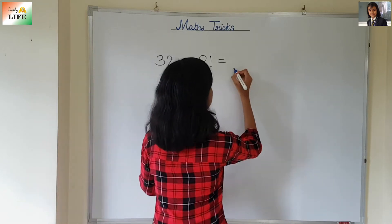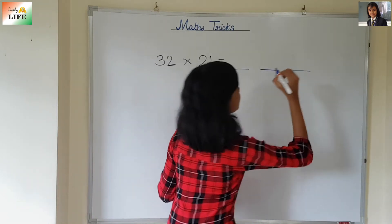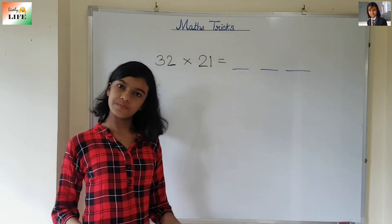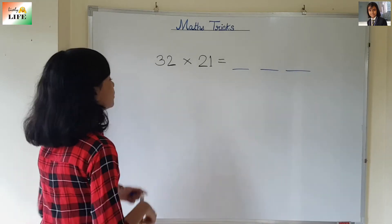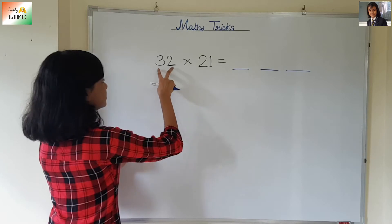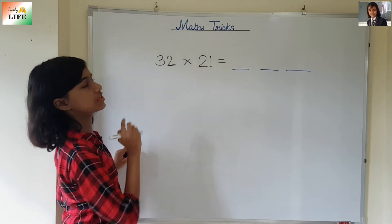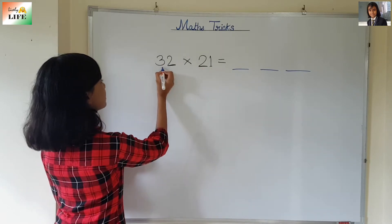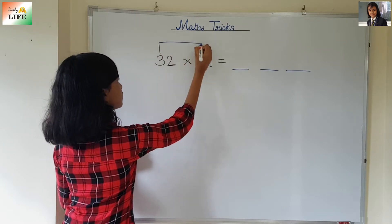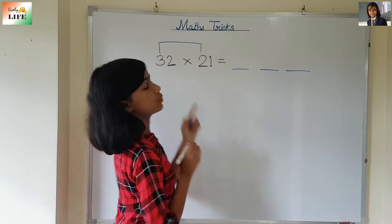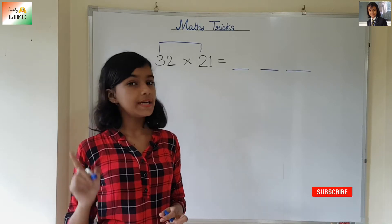All you need to do is put 3 dashes. Now, you are going to multiply the first number's first digit with the second number's first digit, means 3 into 2. 3 and 2 — what is 3 multiplied by 2? It is 6.